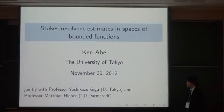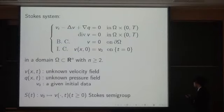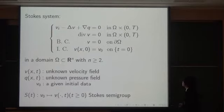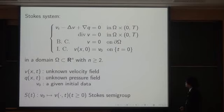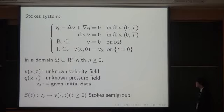Let me start with the Stokes equation. We consider the Dirichlet boundary condition to the velocity. Omega is a domain in n-dimensional Euclidean space with n greater than 2. V is the velocity, Q is the pressure, and V0 is given initial data. St denotes the Stokes semigroup — the solution operator from initial data to the solution velocity. It is known that the Stokes semigroup forms an analytic semigroup in Lr solenoidal vector space, and I'm going to talk on the analyticity of this Stokes semigroup in L-infinity.